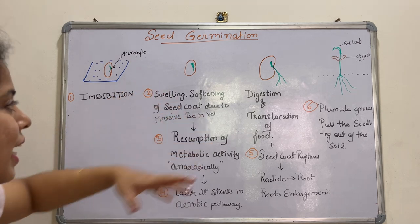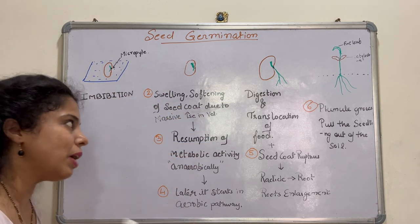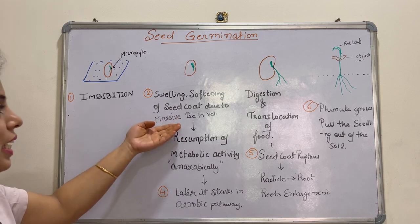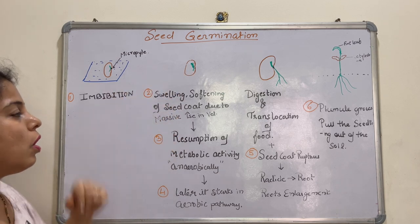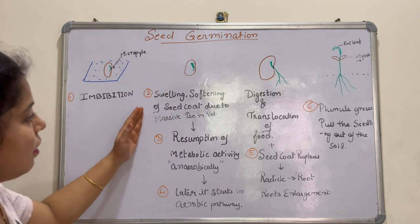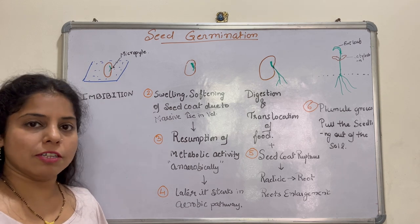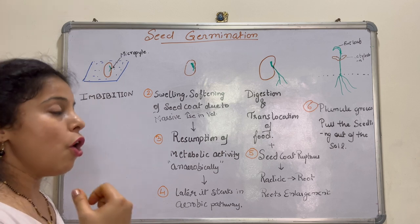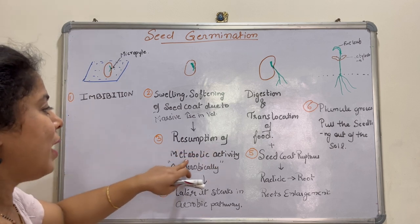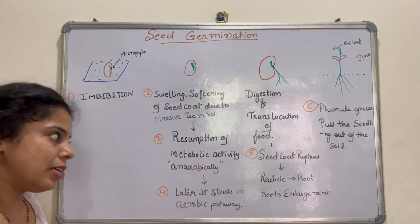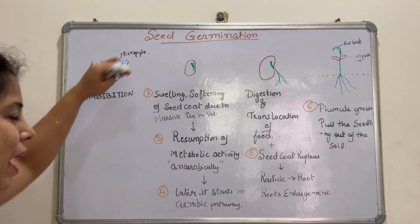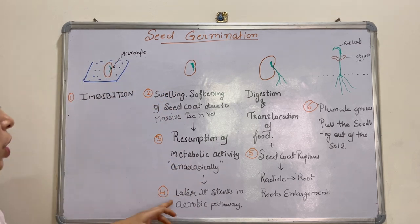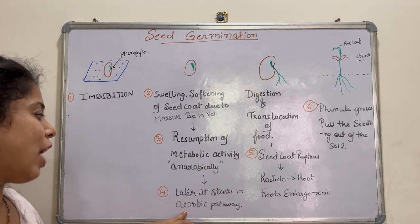The seed coat gets swelled up and softens, and due to this we can see a massive increase in the volume of the seed. Now, because the seed was in a dormant condition, resumption of metabolic activity anaerobically starts, and then shifts to the aerobic pathway.